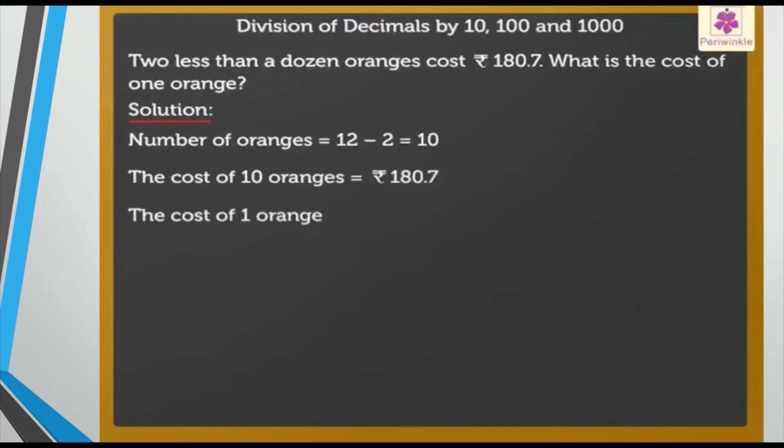What will be the cost of one orange? So 180.7 divided by ten. The decimal will shift only one digit to the left, so it will be 18.07. The cost of one orange is ₹18.07. I hope it is clear to you.